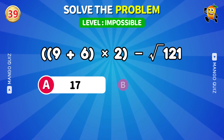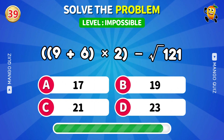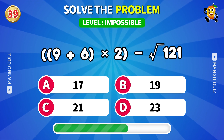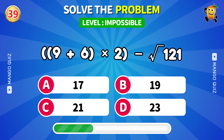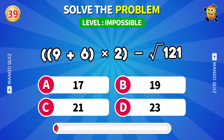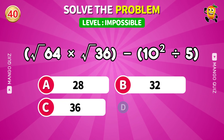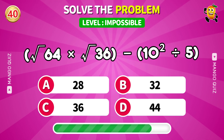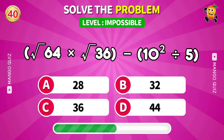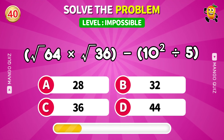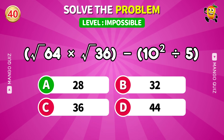9 plus 6 times 2 minus root 121. Answer: 10. Next: root 64 times root 36 then minus 10 squared over 5. Answer: 28. Are you ready for your next adventure? Select your next challenge and dive in — and don't forget to subscribe to our channel for more.